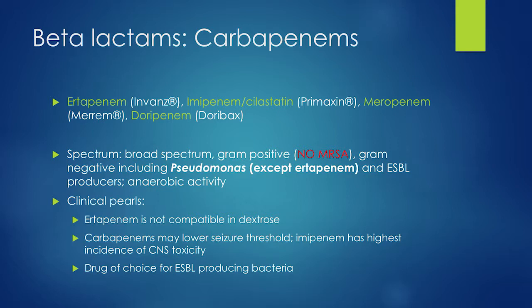We have four carbapenems: ertapenem, imipenem, meropenem, and doripenem. The biggest thing to remember is that imipenem, meropenem, and doripenem all have Pseudomonas coverage, whereas ertapenem does not. The reason we always ask about Pseudomonas and MRSA coverage is because these are your two most common hospital-acquired pathogens, especially in hospital-acquired pneumonia.